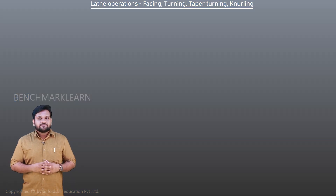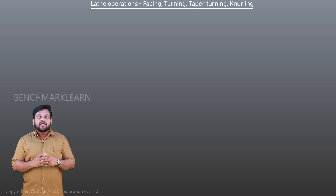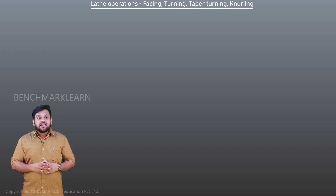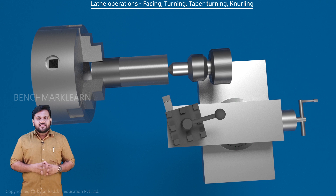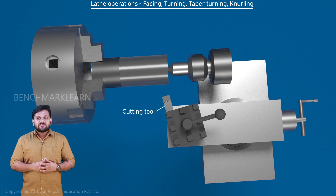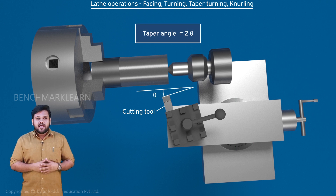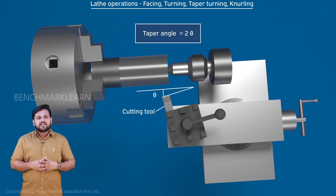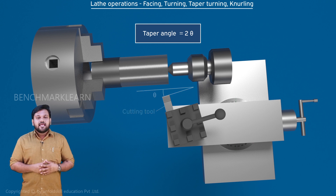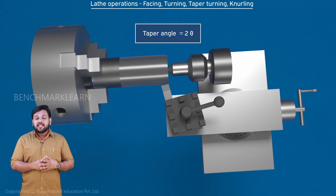Taper turning is the operation of producing a conical surface on the workpiece. It can be done in multiple ways. The first one is the forming method. Here we use a tool of straight edge with its width larger than the required length of taper. We keep the tool edge at an angle which is half the taper angle and feed it perpendicular to the lathe axis.